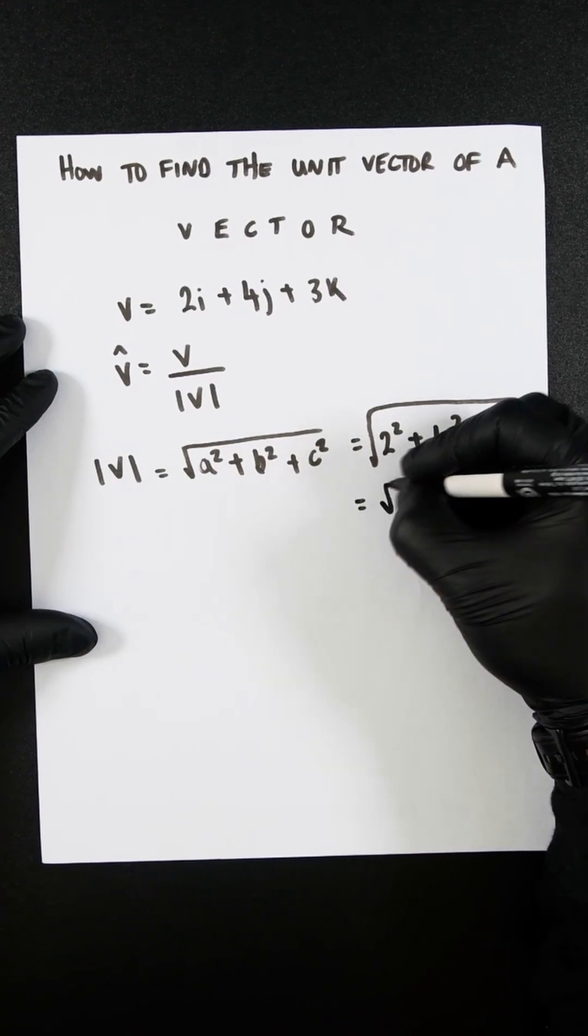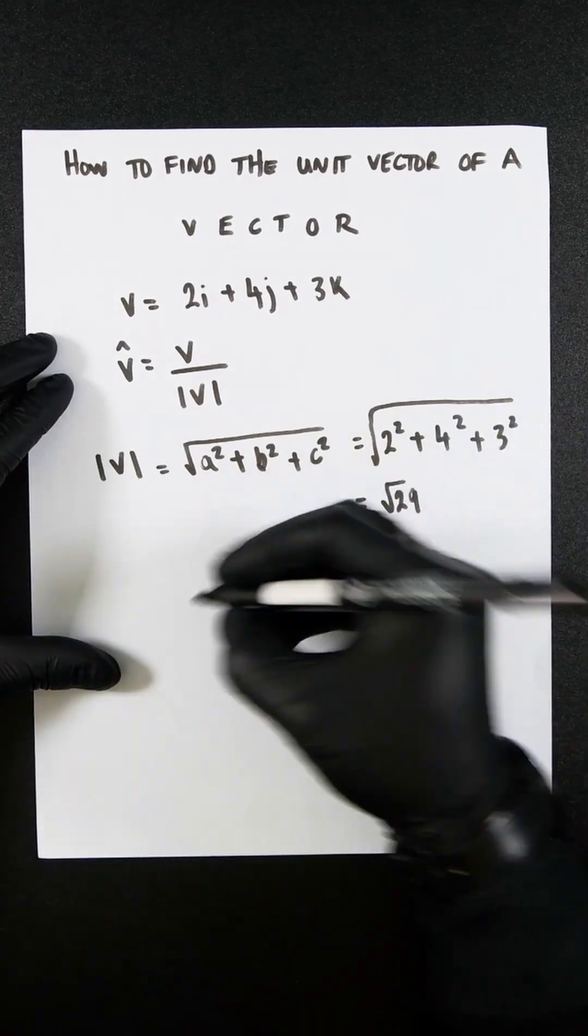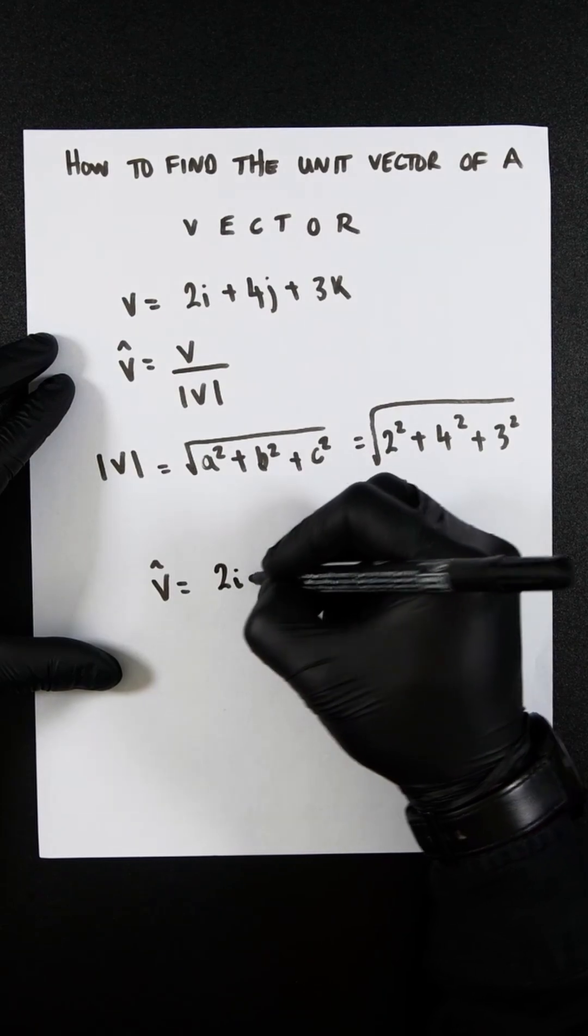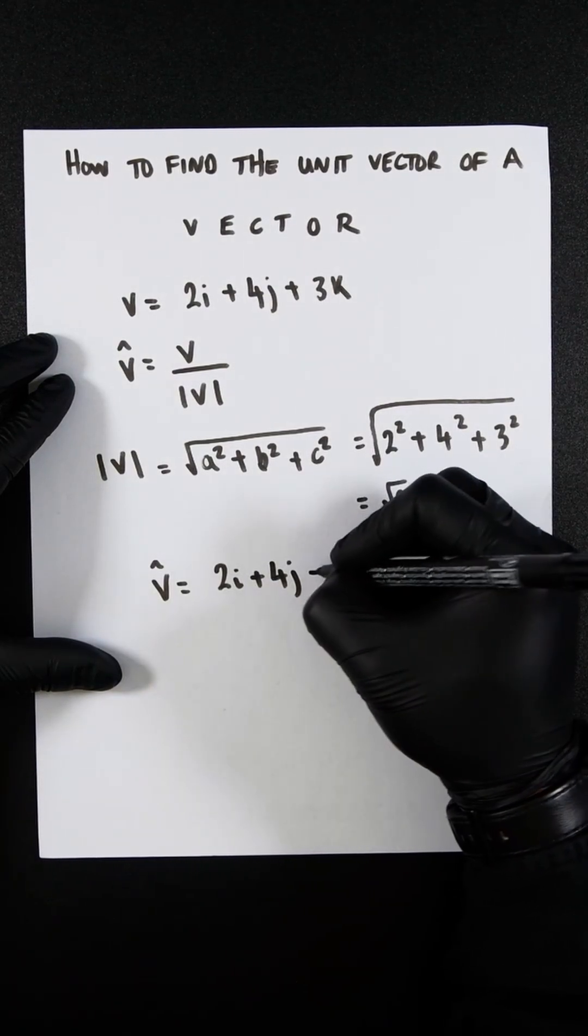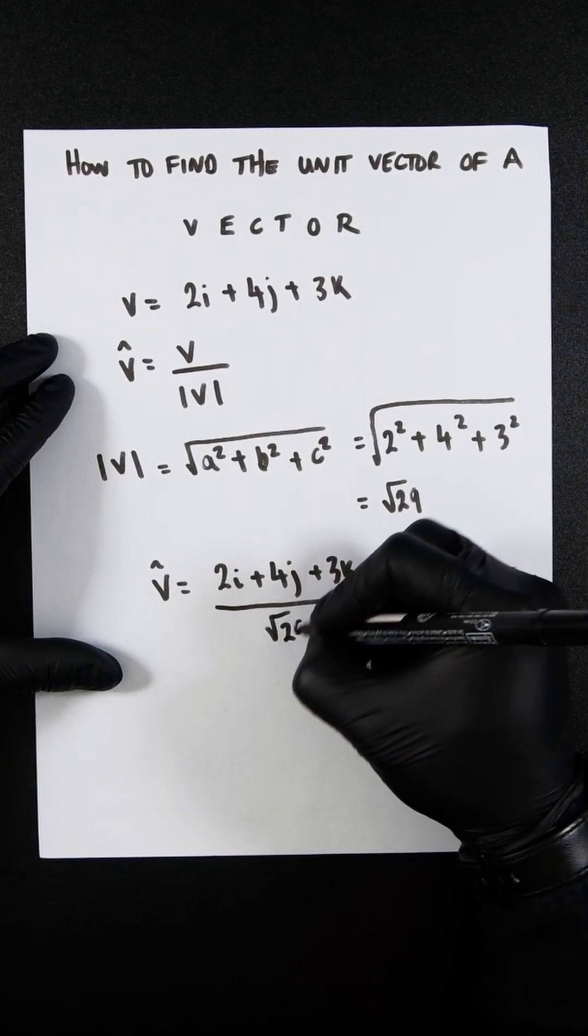That is going to be the root 29. So now we plug that into here, and we're going to get the unit vector as 2i plus 4j plus 3k, all divided by the square root of 29.